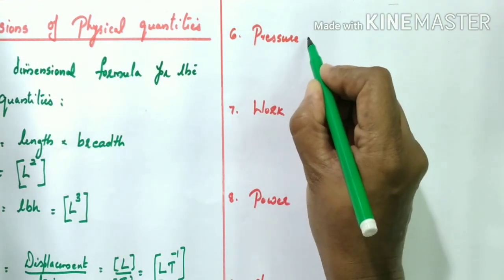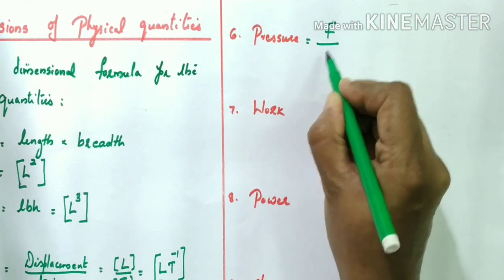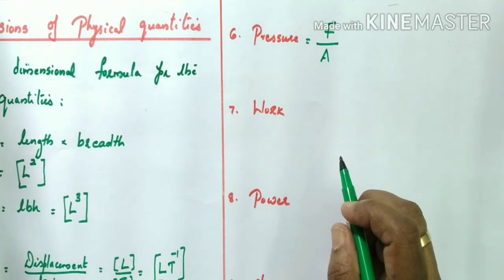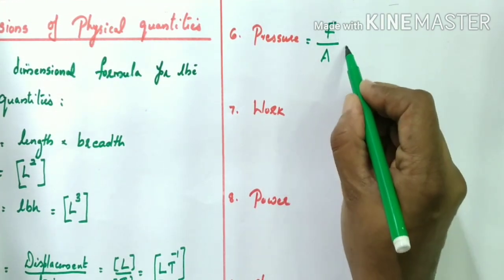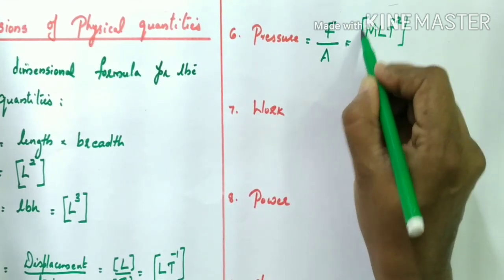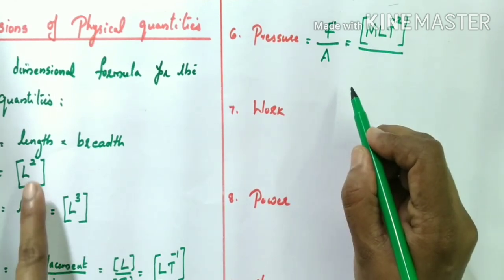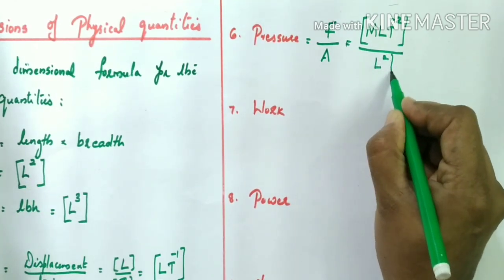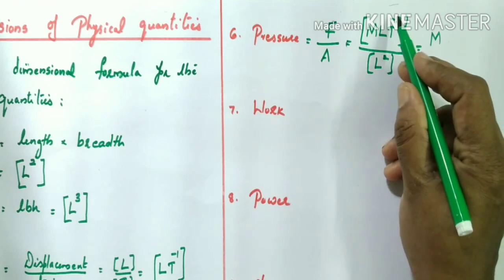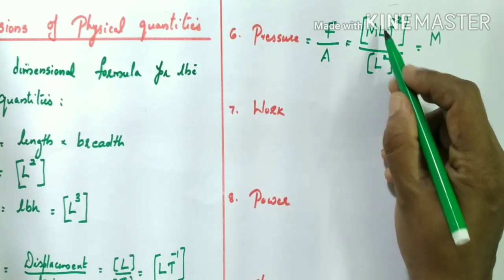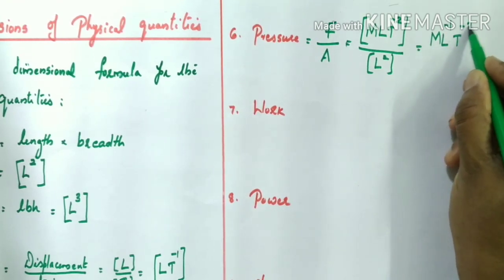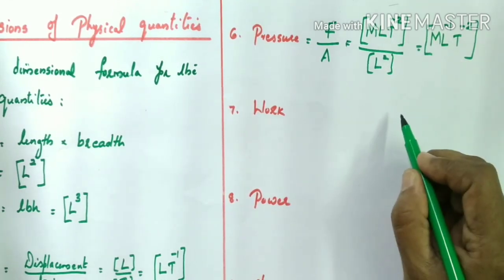Now we can write the dimension of pressure. The formula for pressure is force divided by area. The dimension of force is [MLT⁻²]. The dimension of area is [L²]. So the dimension of pressure is MLT⁻² divided by L². Bringing L² to the numerator gives L⁻², so L¹ × L⁻² = L⁻¹. Therefore, the dimensional formula for pressure is [ML⁻¹T⁻²].